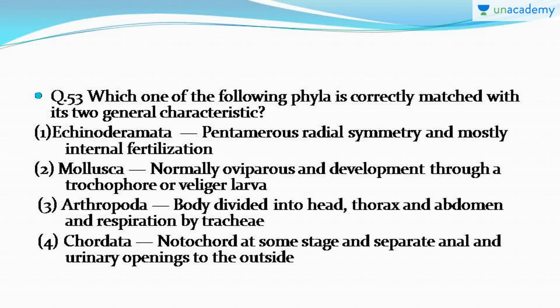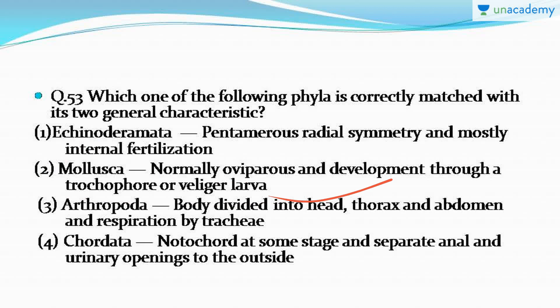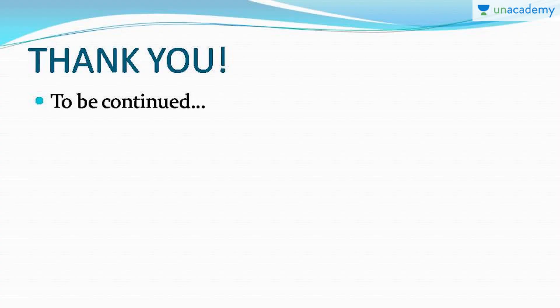The last question: which one of the following phyla is correctly matched with its two general characteristics? Concentrate on both characteristics and try to answer. The correct answer is option number two, because only in that option are both characteristics of Mollusca correctly given: normally oviparous, and development through a trochophore or veliger larva. All phyla and their characteristics are asked each year, so study them thoroughly from NCERT. Good luck — keep working hard!